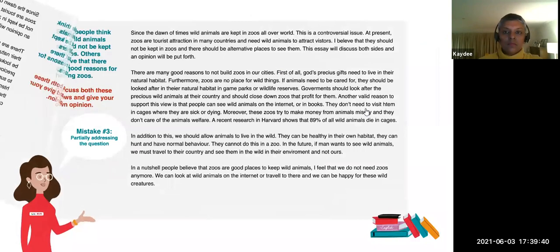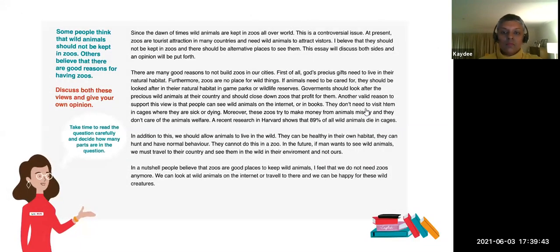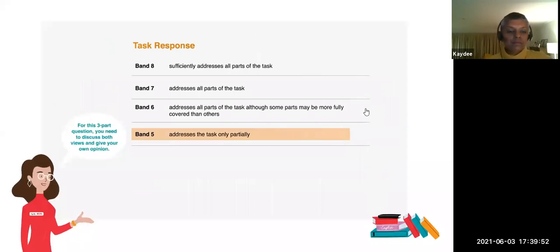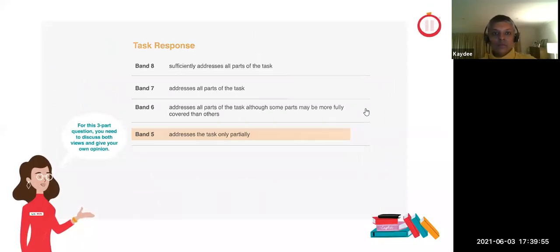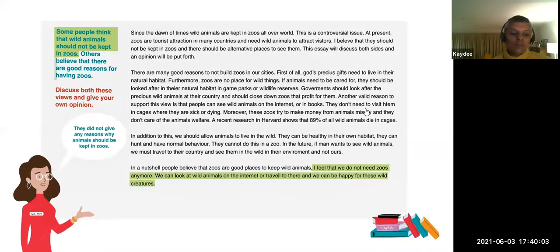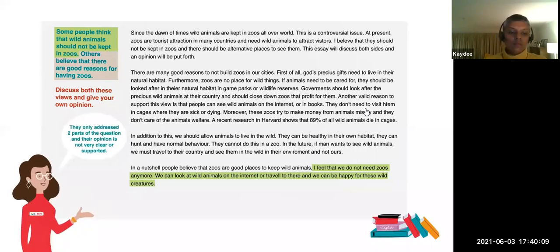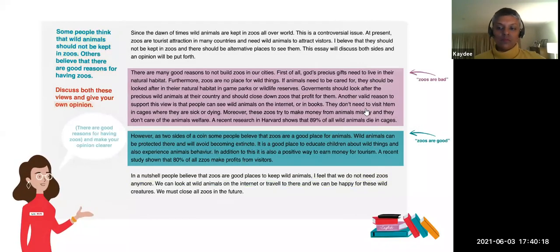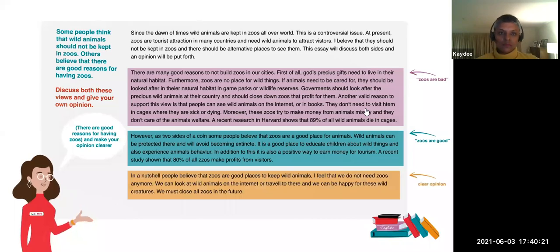Mistake number three: partially addressing the question. Take time to read the question carefully and decide how many parts are in the question. For this three-part question, you need to discuss both views and give your own opinion. This writer only agreed that wild animals should not be in zoos — they did not give any reason why animals should be kept in zoos, and their opinion was not very clear or supported. Solution: include the other viewpoint — there are good reasons for having zoos — and make your opinion clearer.